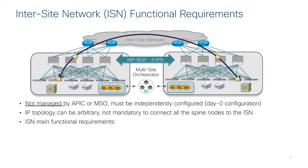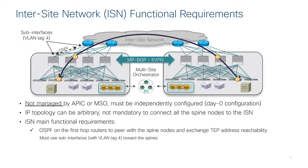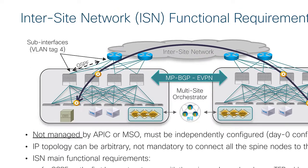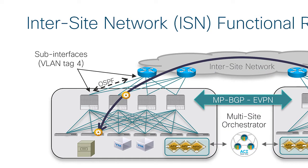In terms of the functionalities that the inter-site network needs to provide, first of all we need to be able to establish a routing peering with the spines. The first-layer inter-site network devices directly connected to the spines create an OSPF adjacency with the spines using point-to-point layer-3 links. These links are usually addressed using a small subnet, a /30 or even a /31. From an implementation perspective on the spine side, these layer-3 interfaces are created as sub-interfaces tagging the traffic with VLAN 4, meaning the first-layer inter-site network device must support sub-interfaces with the VLAN 4 tag.